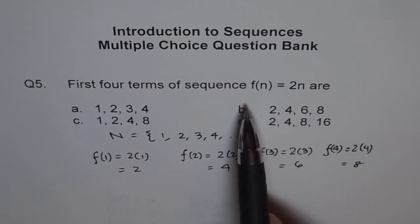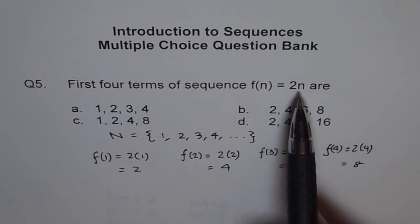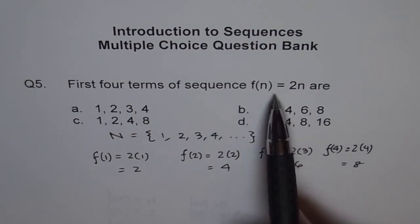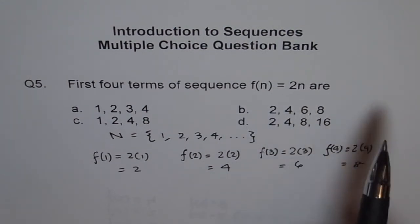Plug in your values and write down your answer. You can count, right? 1 times 2 is 2, 2 times 2 is 4, 2 times 3 is 6, 2 times 4 is 8. Simple.